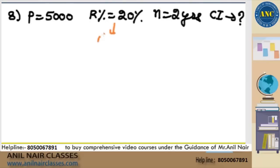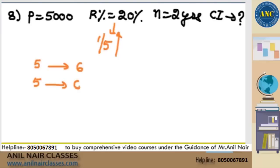20% is 1 by 5. Rate means increase. Original value is 5. Now it became 6 on increase of 1 on 5. Original value is 5, there is an increase of 1 on 5, making it 6.